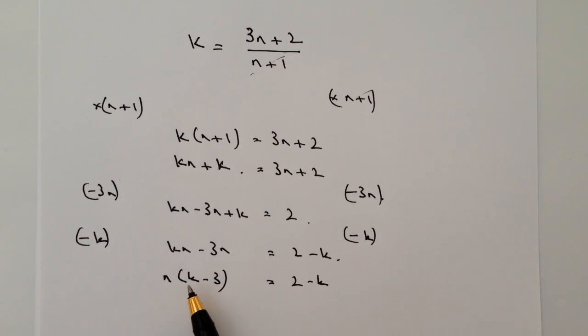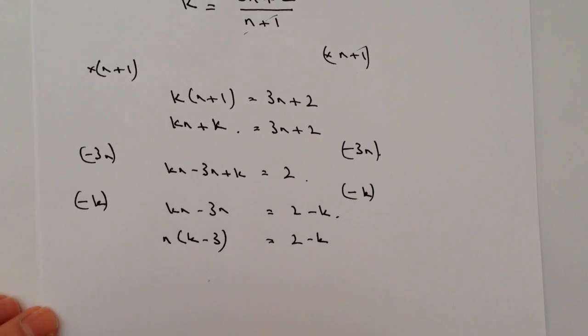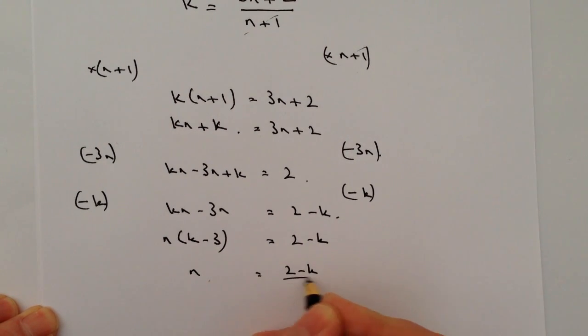And then because this is a multiplication of n, I can then just simply divide through by k minus 3. So what I end up with at the end of it is just an expression for n of 2 minus k divided by k minus 3. And that would be the answer to this particular question.